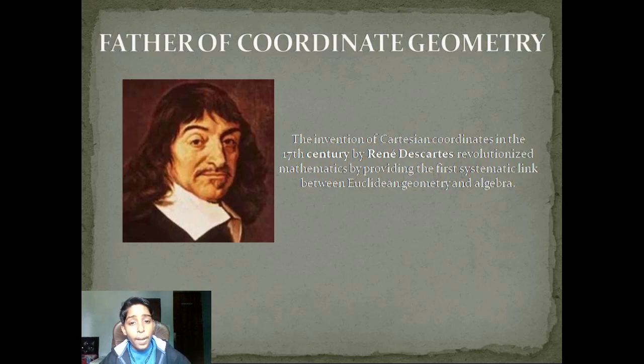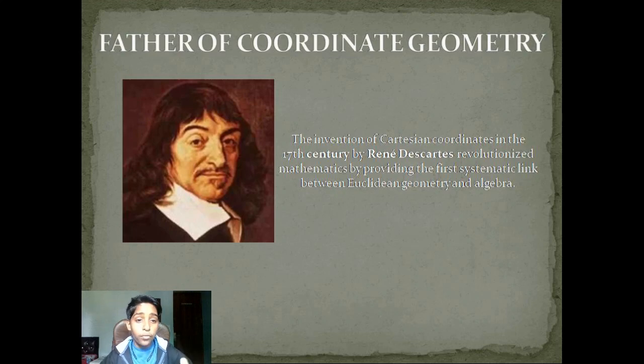The father of coordinate geometry is René Descartes. The invention of Cartesian coordinates in the 17th century by René Descartes revolutionized mathematics by providing the first systematic link between Euclidean geometry and algebra.